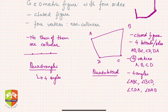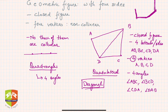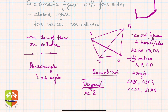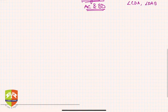There is one more geometrical aspect of this figure and that is called a diagonal. The diagonal of a quadrilateral is formed by joining two opposite vertices. So the diagonals here are AC and BD. There are two diagonals in a quadrilateral.